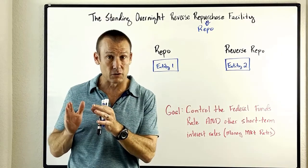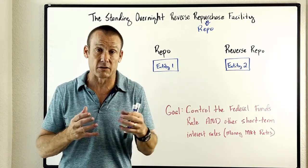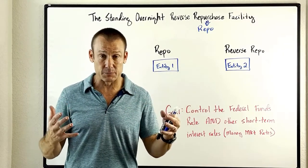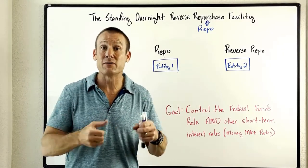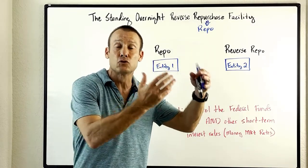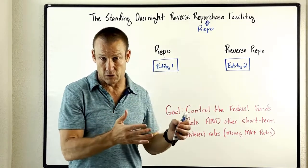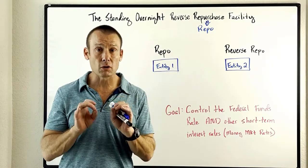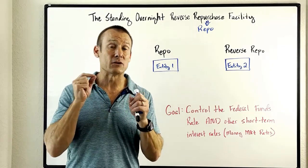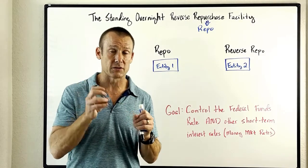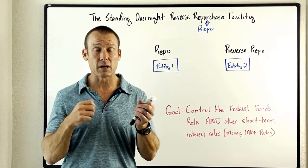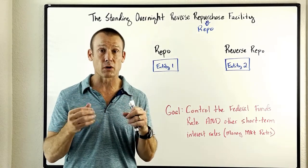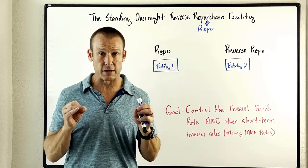Bank reserves at the Fed exploded at that time period. We moved from a limited reserve — where banks had a limited amount of reserves — to an ample amount, enough to cover all their needs, to even an abundant and super-abundant amount of reserves. When reserves were no longer limited, the Fed needed new policy tools to change the federal funds rate.